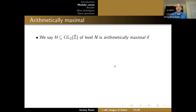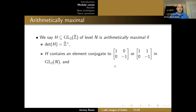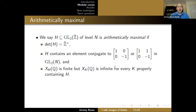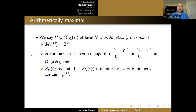A subgroup of level N is arithmetically maximal if: the determinant is surjective, H contains an element conjugate to either [1,0;0,−1] or [1,1;0,−1] in GL_2(N), X_H(Q) is finite, but X_K(Q) is infinite for every K properly containing H. These conditions are necessary for there to possibly be elliptic curves over Q whose adelic image equals H. The Weil pairing guarantees the determinant of the adelic Galois image must be Z-hat*; the conjugacy condition is necessary for non-cuspidal real points on X_H; and the third property isolates finitely many subgroups of a given prime-power level.